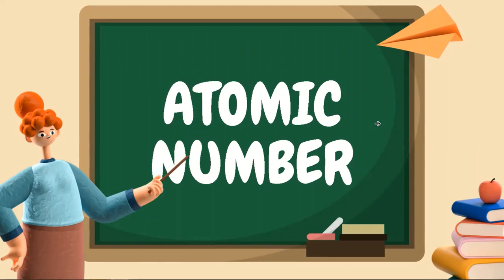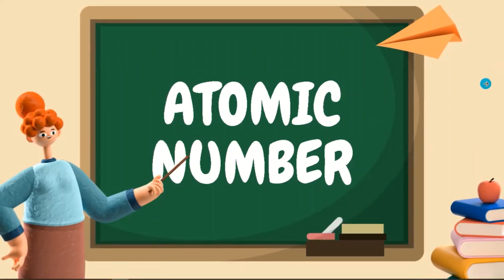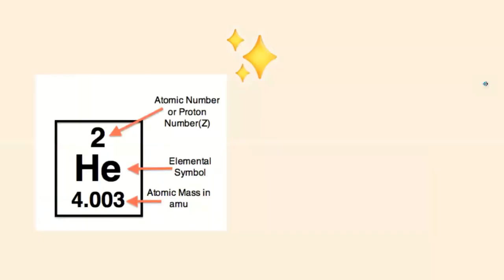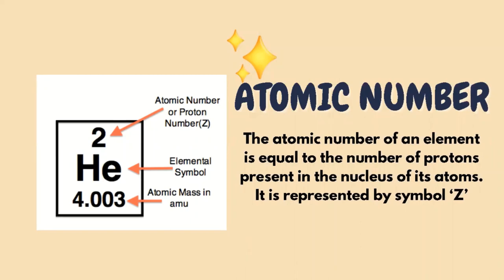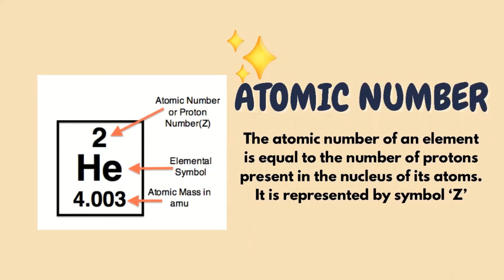Atomic number. Atomic number of an element is equal to the number of protons present in the nucleus of its atom. It is represented by symbol Z.